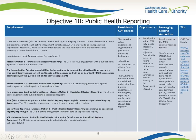Objective 10: Public Health Reporting. There are three measures with exclusions, one for each type of registry. EPs must minimally complete two non-excluded measures through active engagement compliance. An EP may provide up to two specialized registries for Measure 3, which will be counted toward the total number of non-excluded measures necessary to meet the minimum criteria. Hospitals must meet four measures and EPs must meet two. Measure Option 1, Immunization Registry Reporting: The EP is in active engagement with a public health agency to submit immunization data. The immunization registry should still be the highest priority to meet this objective. Other providers who administer vaccines can still participate and will be onboarded by DOH as resources permit.